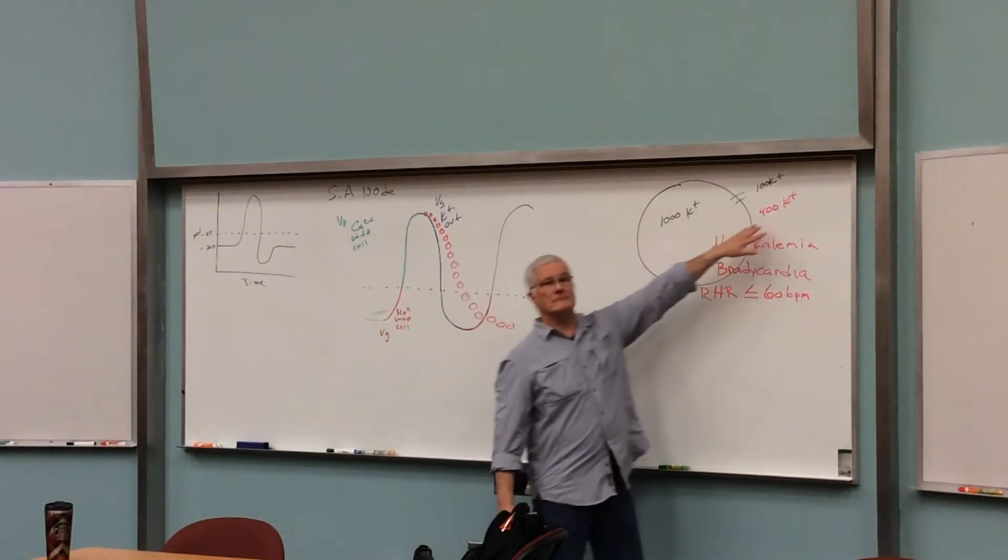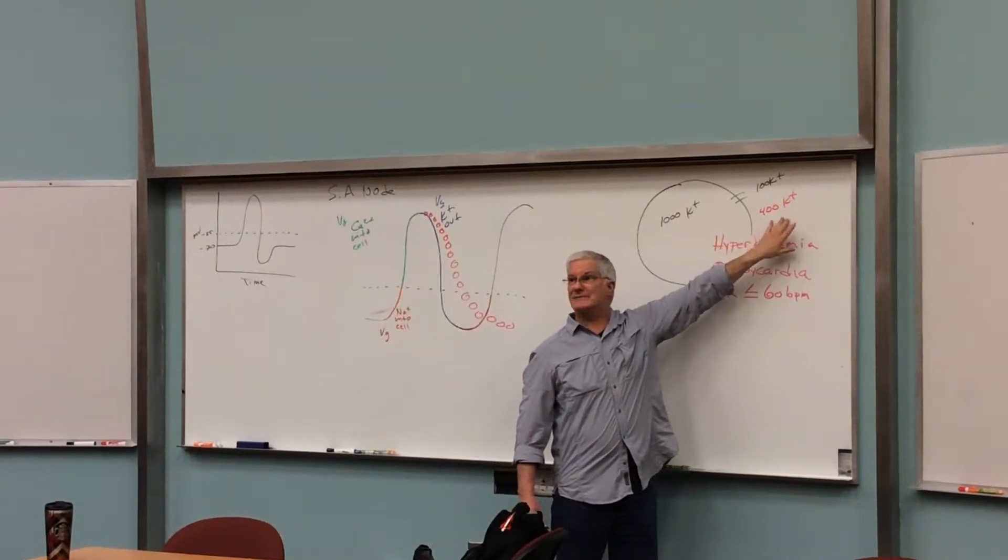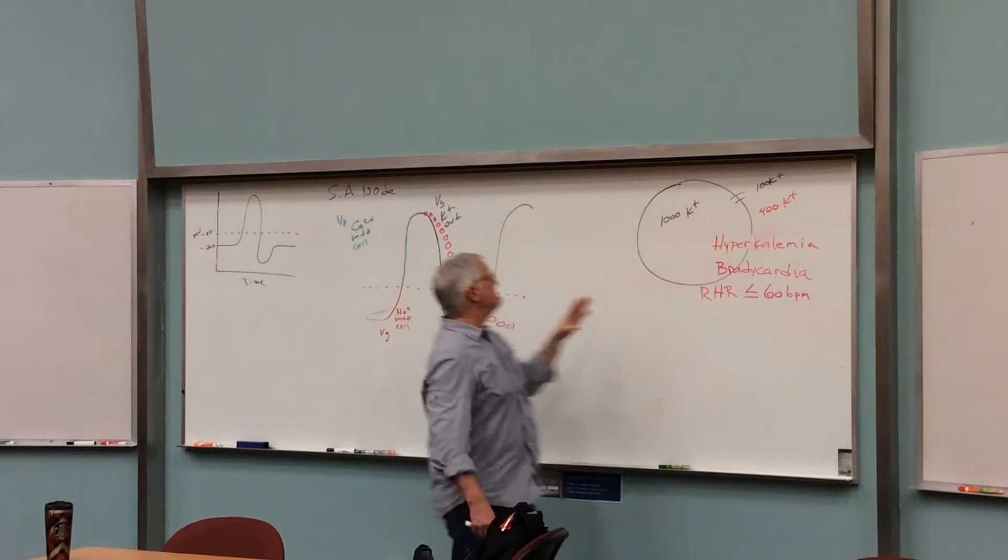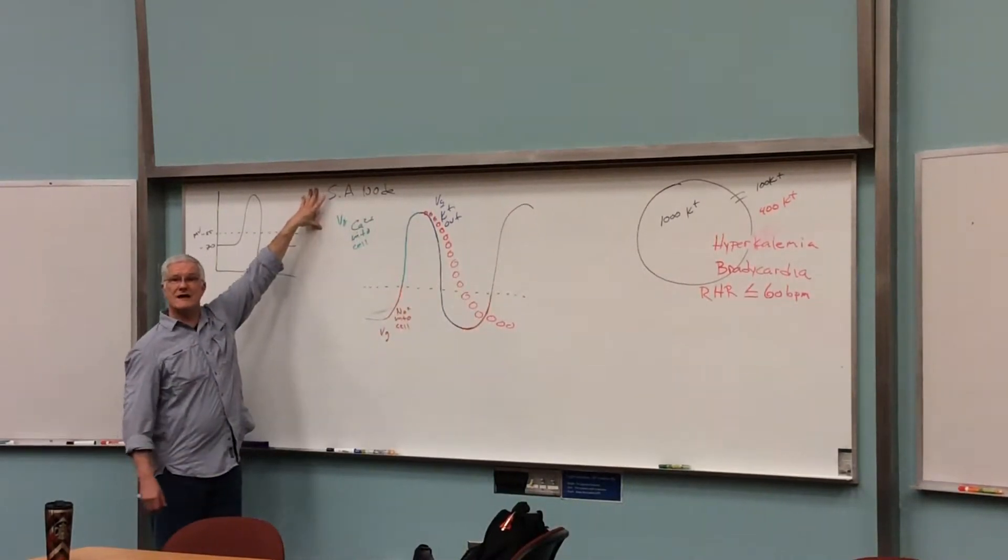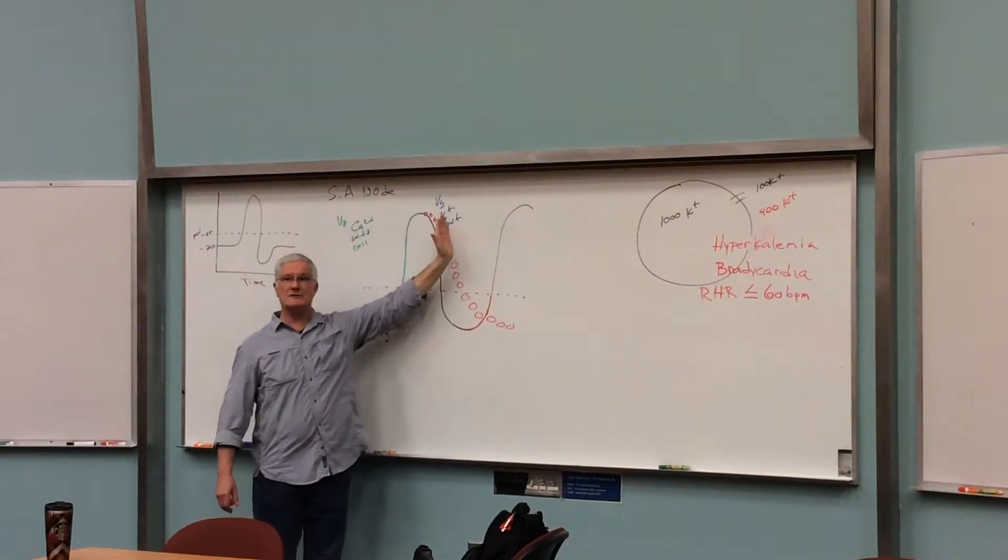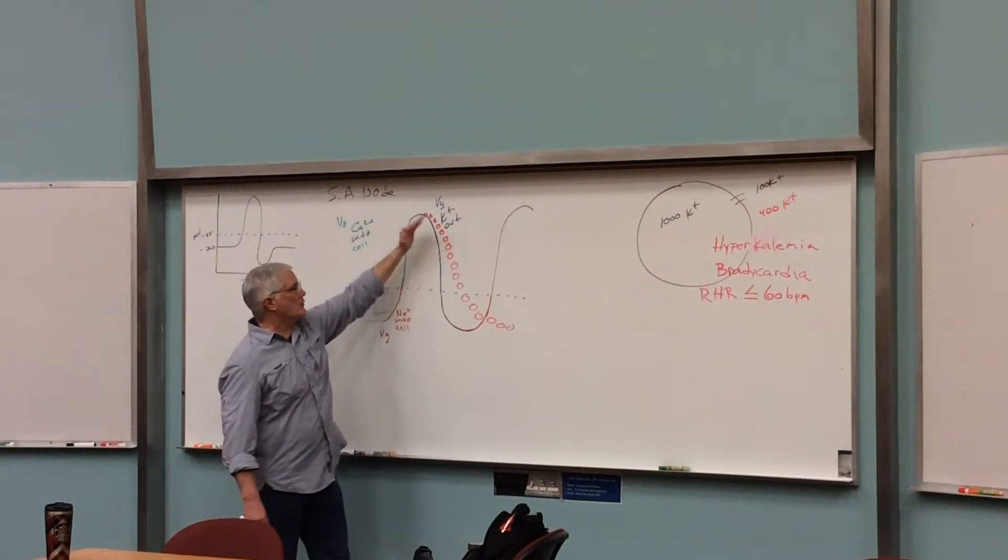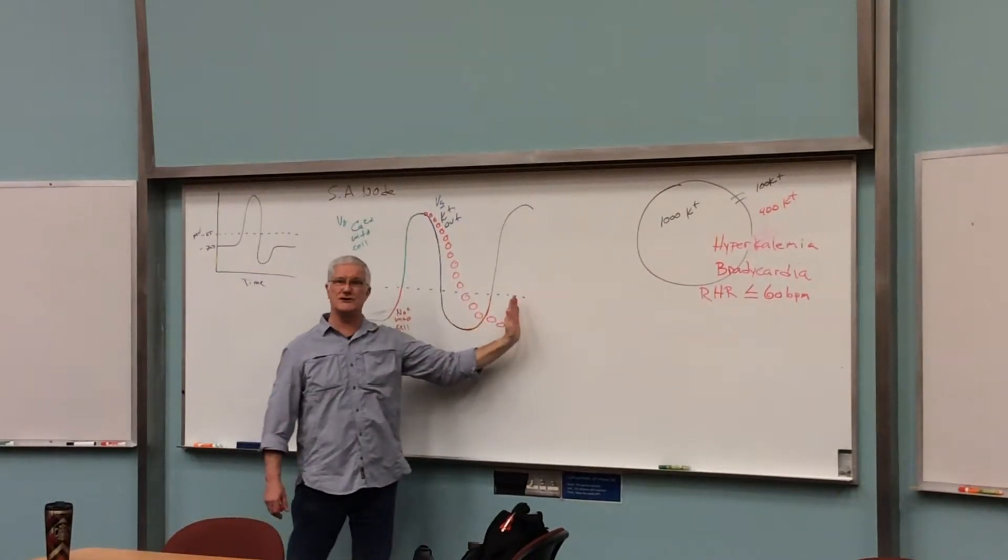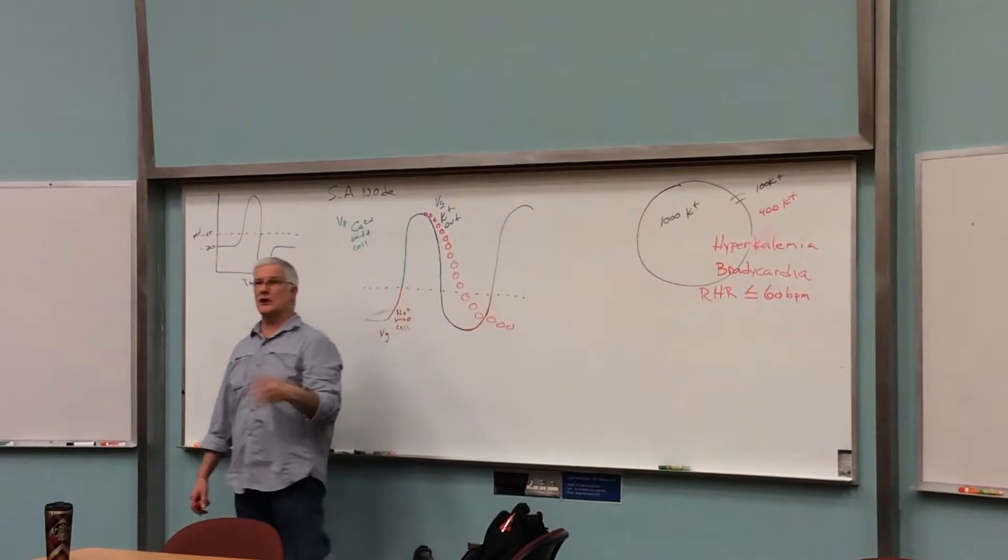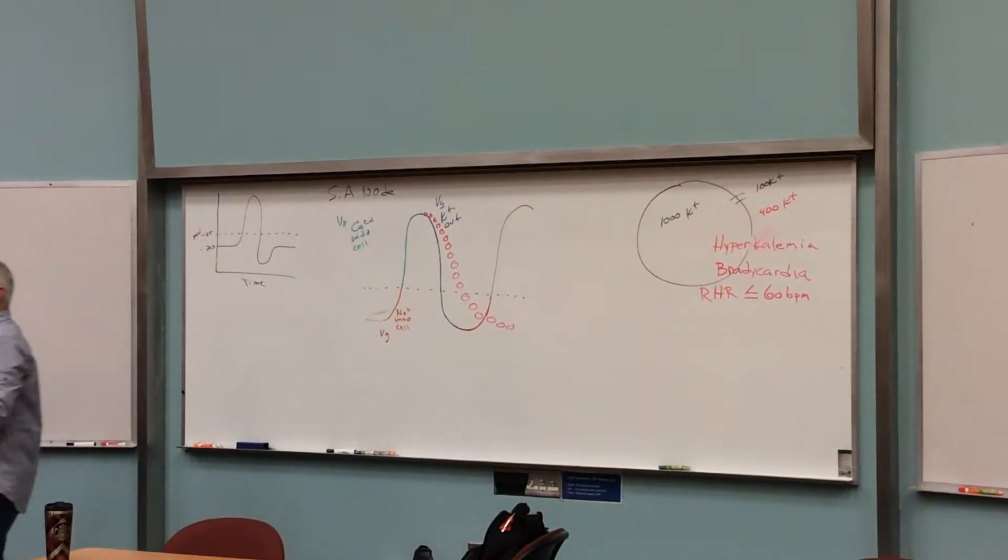These ions could be responsible, an imbalance of potassium. Could mean that it takes longer for the SA node cells to have the potassium diffuse out, which means it's going to take more time to go through repolarization. It would give you a slower than normal heart rate.